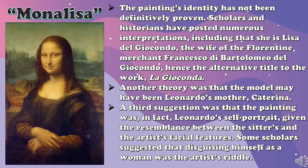One of Da Vinci's best-known works is The Mona Lisa. But who really is the girl in the Mona Lisa painting? The painting's identity has not been definitively proven yet. Scholars and historians have proposed numerous interpretations, including that she is Lisa del Giocondo, the wife of the Florentine merchant Francesco di Bartolomeo del Giocondo, hence the alternative title La Gioconda. Another theory was that the model may have been Leonardo's mother, Caterina. A third suggestion was that the painting was in fact Leonardo's self-portrait, given the resemblance between the sitter and the artist's facial features. Some scholars suggested that disguising himself as a woman was the artist's riddle.